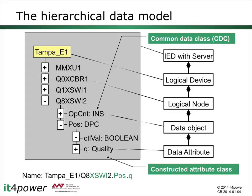It is at the data attributes where we find the values. However, data attributes can also have a structure as a data type. In that case, we have what we call a constructed attribute class, shown here with the example of quality.